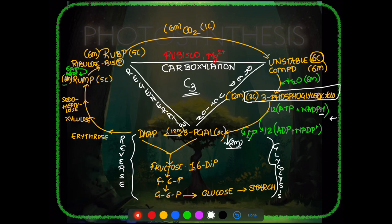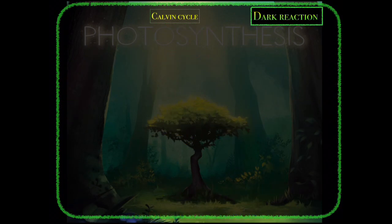The Calvin cycle is called the photosynthetic carbon reduction cycle because carbon dioxide is reduced by the action of NADPH. The four phases are: carboxylation, reduction, reverse glycolysis (glucose formation), and regeneration of RuBP.